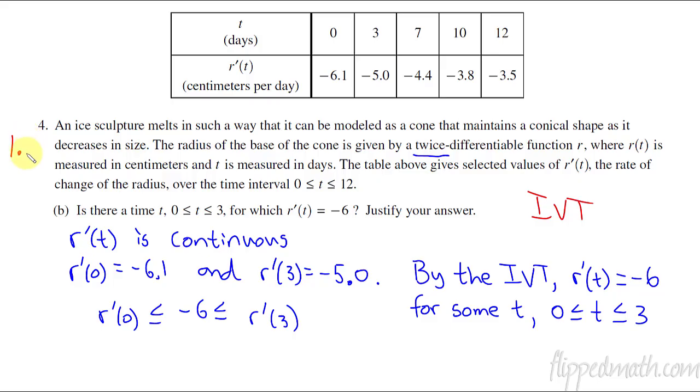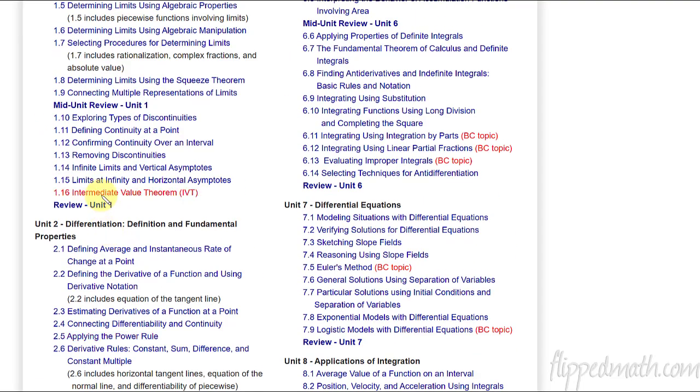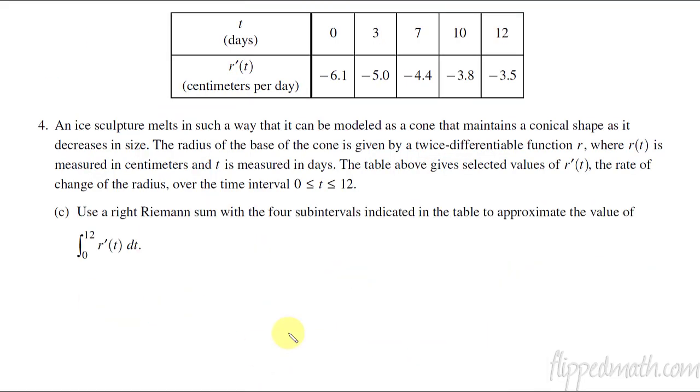And that one is lesson 1.16, intermediate value theorem. Let's go on to part C. We're going to use a right Riemann sum with four sub intervals to approximate the value of the integral. So we're finding the area under the curve of r prime. Our four intervals are 1, 2, 3, 4.